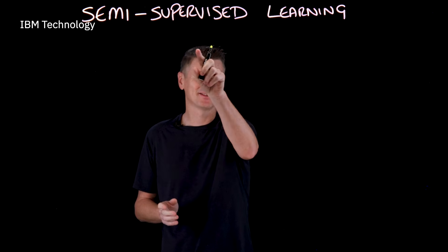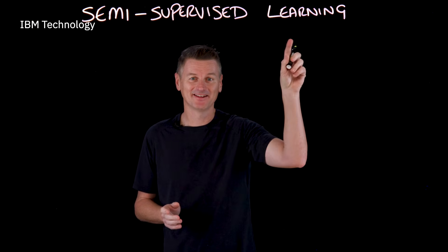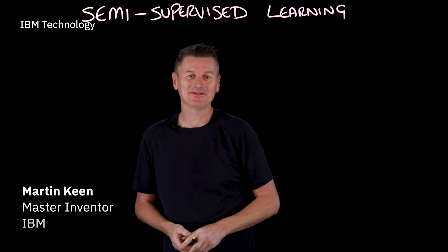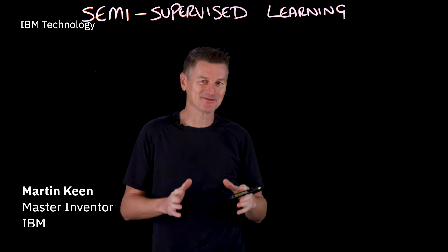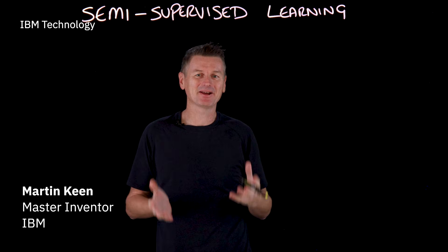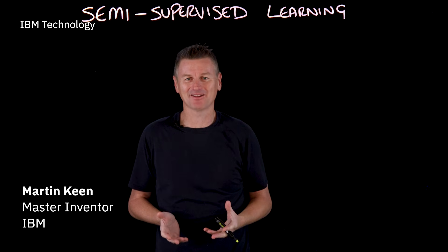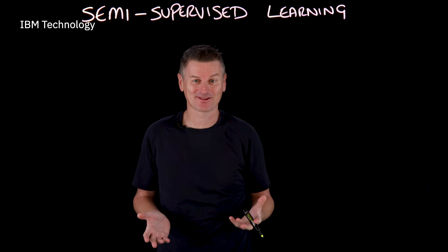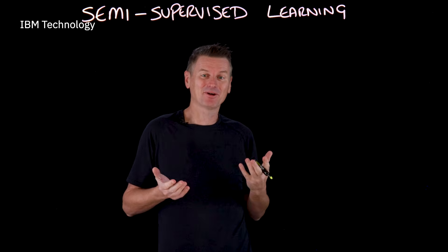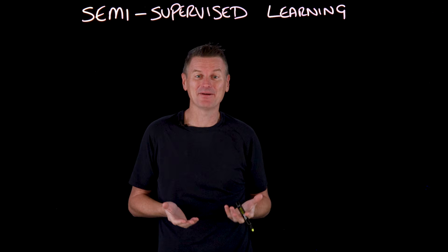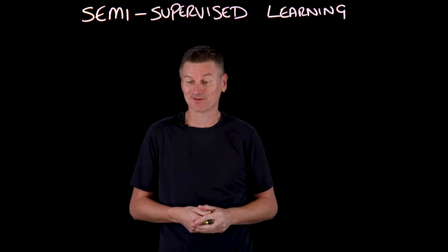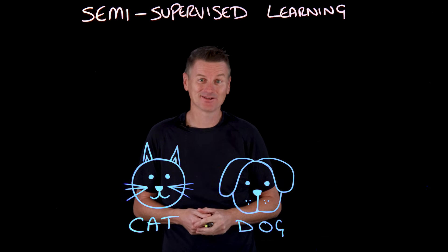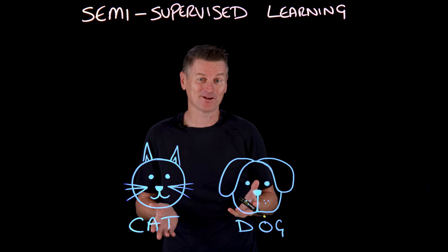What is semi-supervised learning? Let me give you an example. Consider building an AI model that can classify pictures of cats and dogs. If you give the model a picture of an animal, it will tell you if that picture shows a cat or if it shows a dog.